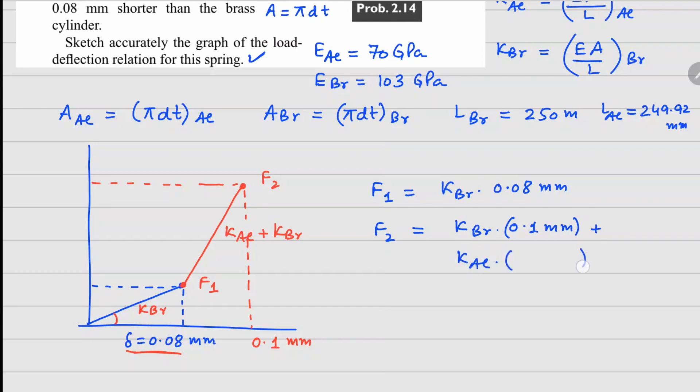Now what will happen with aluminum? When you are at 0.1, aluminum started compressing only from this point. So the net deformation in aluminum is not going to be this 0.1, but it's going to be the gap between this and this. So this you can write as 0.1 minus 0.08 mm.